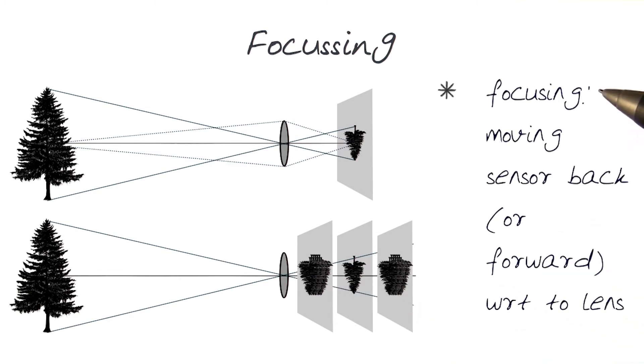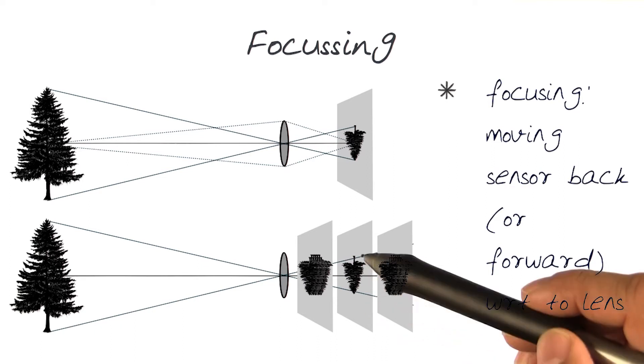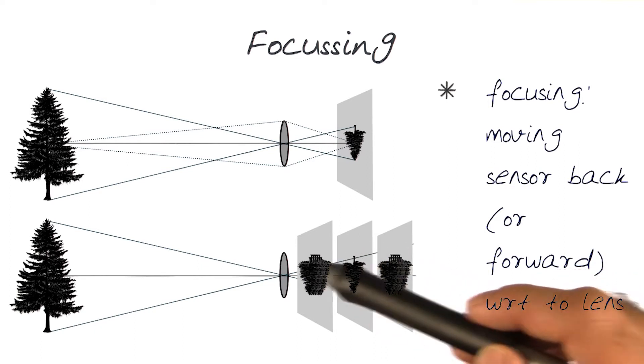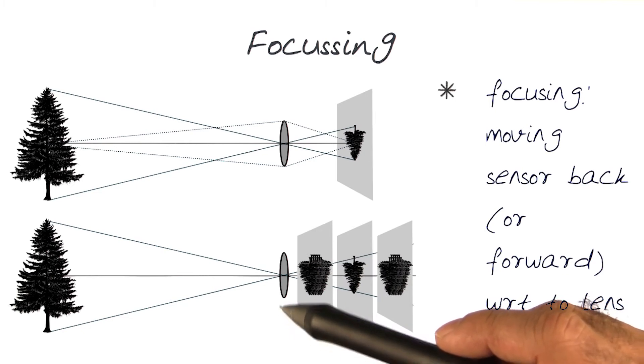Focusing in a camera is done by moving the sensor or sometimes the lens forward and backwards to make sure that the image is formed at the focal point, and the distance between the lens and the sensor plane is set to the focal length of the lens.